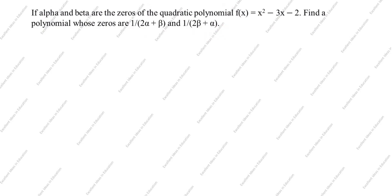Now we will see how to solve this problem. What is given? x² minus 3x minus 2. The standard quadratic polynomial equation is x² + bx + c, where a = 1, b = minus 3, and c = minus 2.